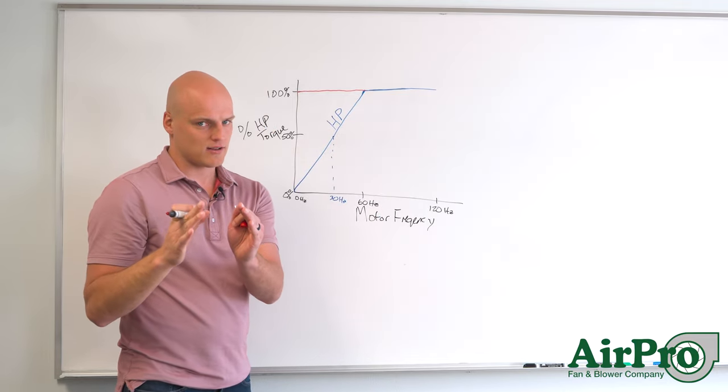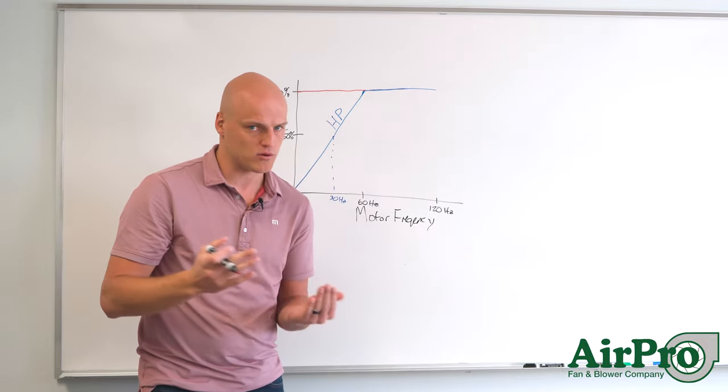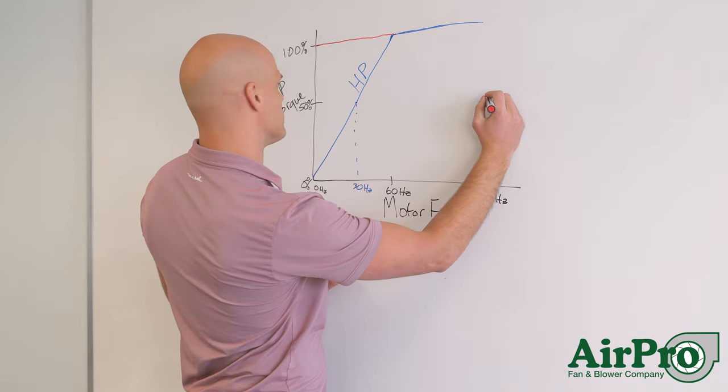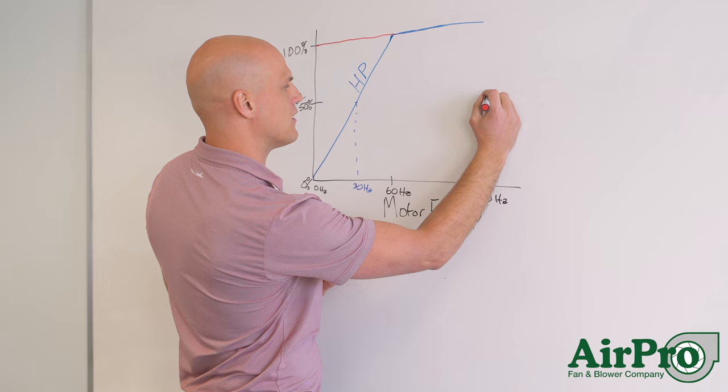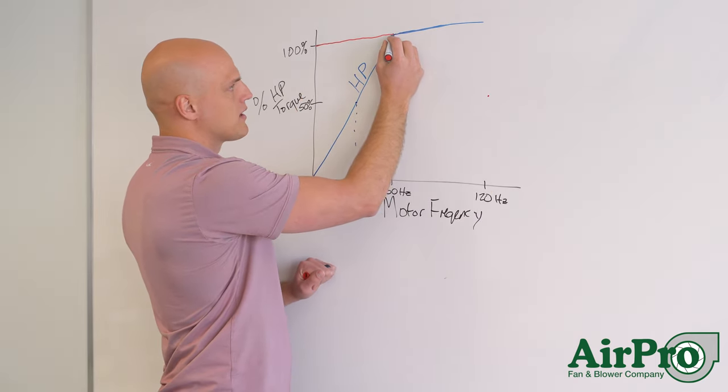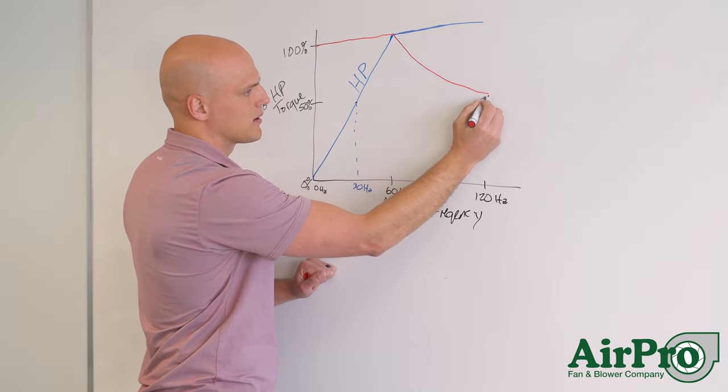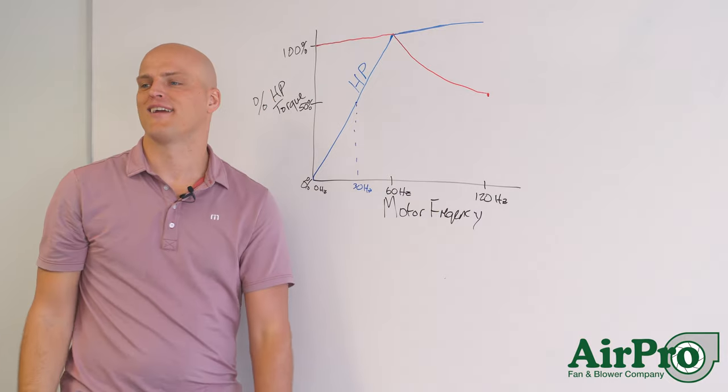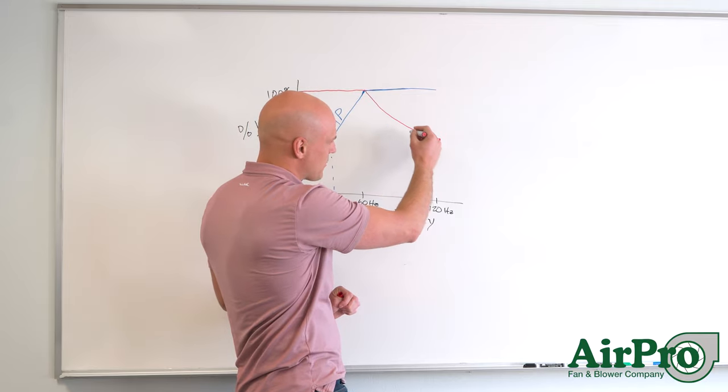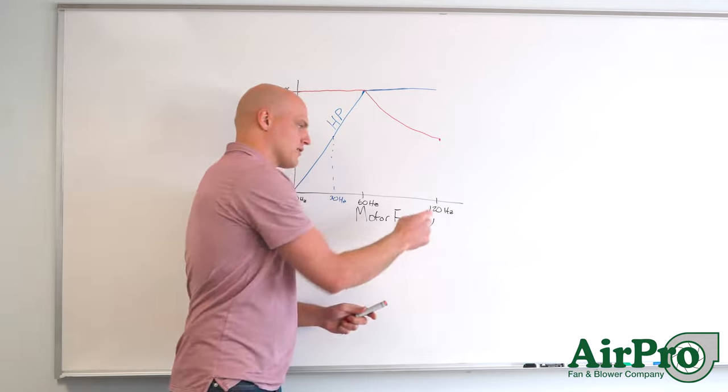That's when torque starts to tail off. So from here out to on a smaller motor that can go up to 120 hertz we're going to come down to 50 percent from this point. And this relationship is a curve that looks like this. So we're coming out and from 60 hertz to 120 hertz we're dipping and we're coming out and we're at 50 percent of the available torque at 120 hertz.